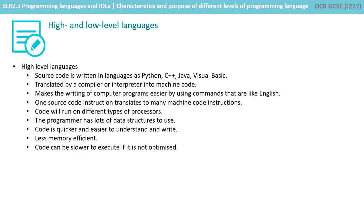High-level languages are written in source code in languages such as Python, C, Java and Visual Basic. They are translated by a compiler or an interpreter into machine code. This makes writing programs easier by using commands which are like English. One source code instruction can translate into many machine code instructions, and the code will run on different types of processors. The programmer has lots of data structures to use and the code is much quicker to write and easy to understand. It is less memory efficient and the code can be slower to execute if it's not optimized well.